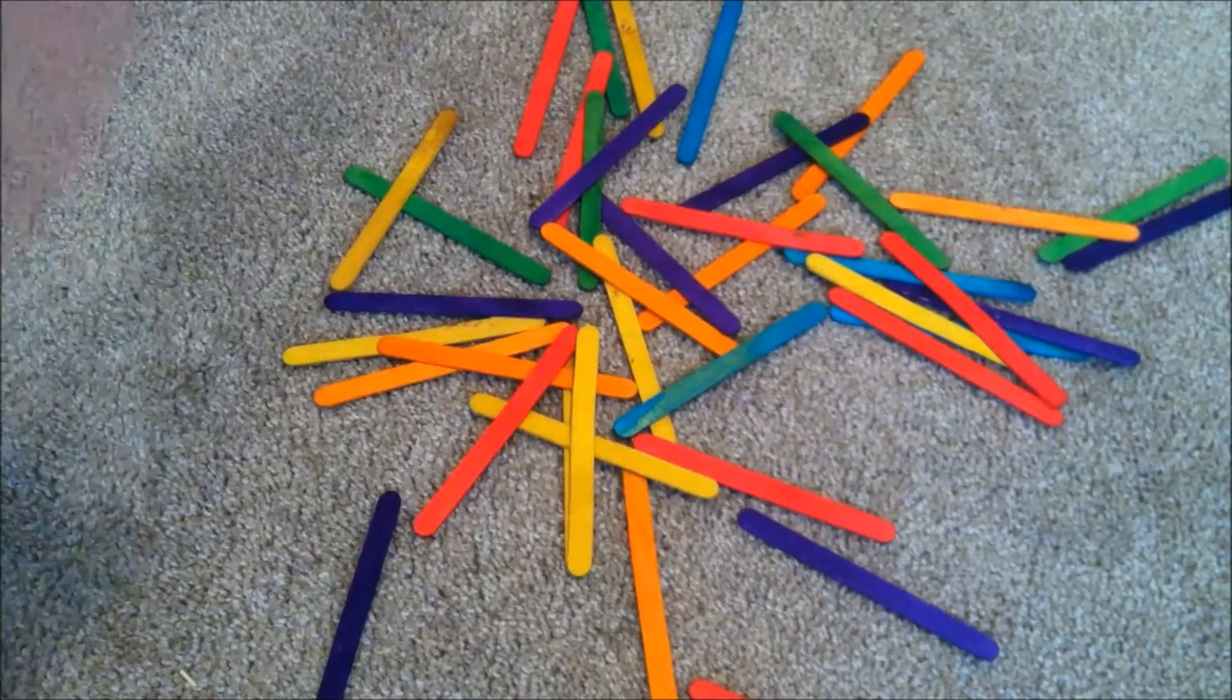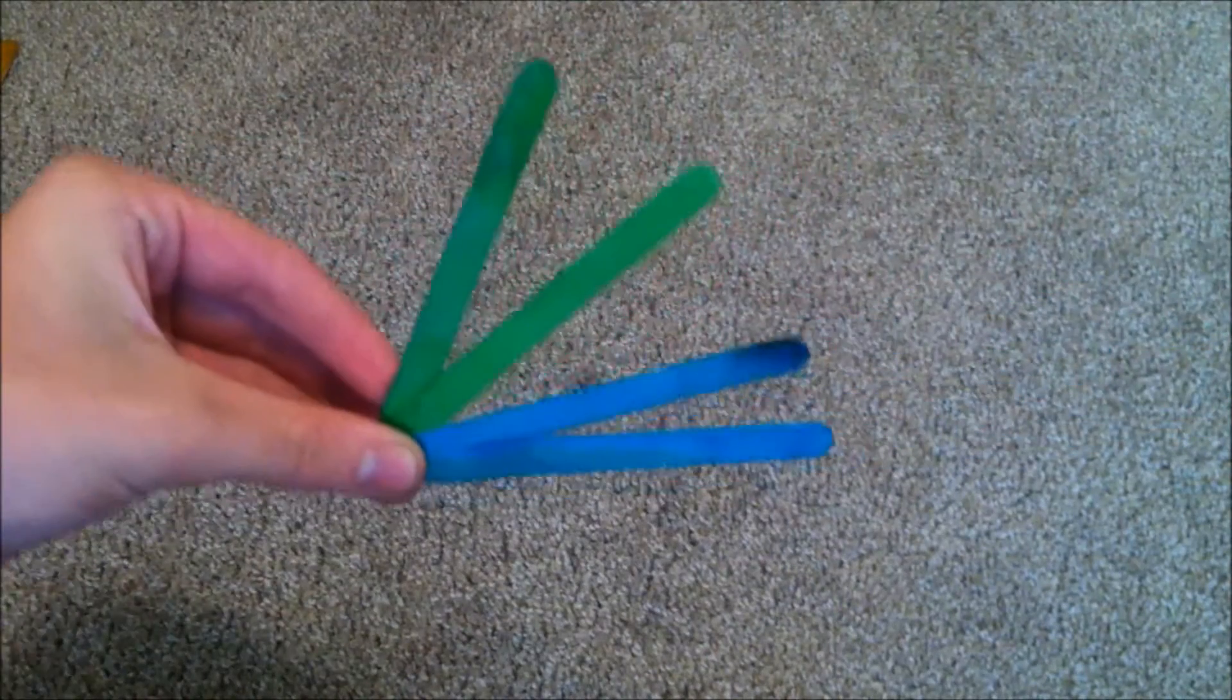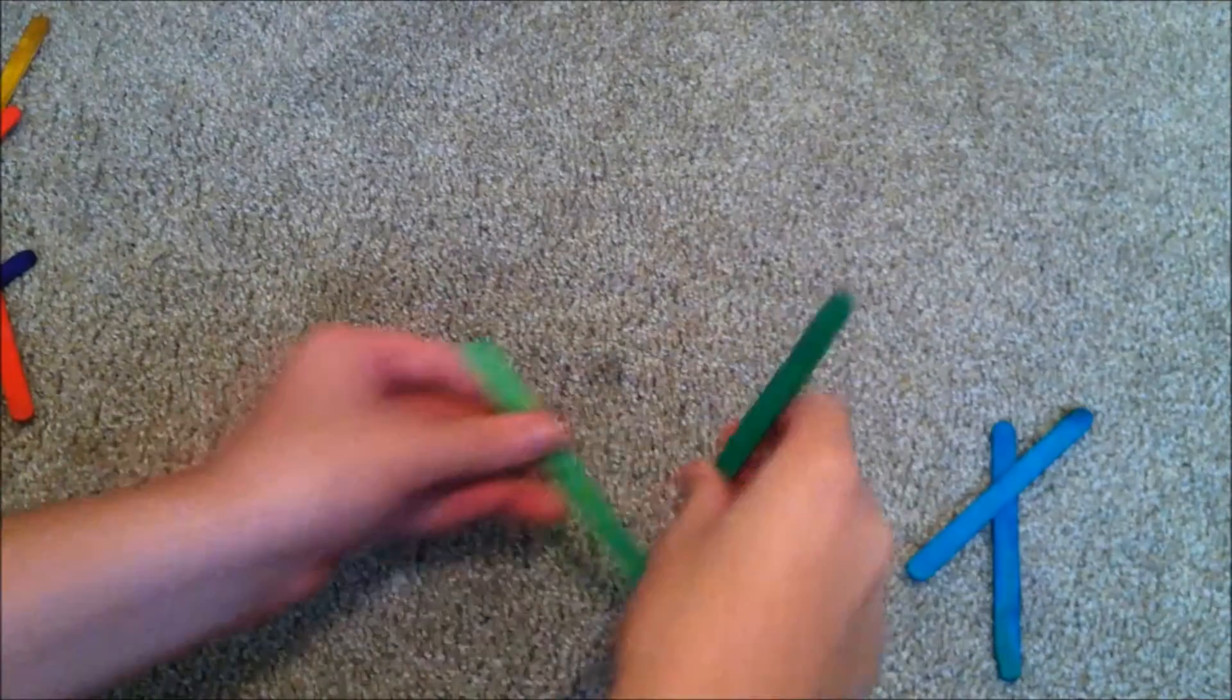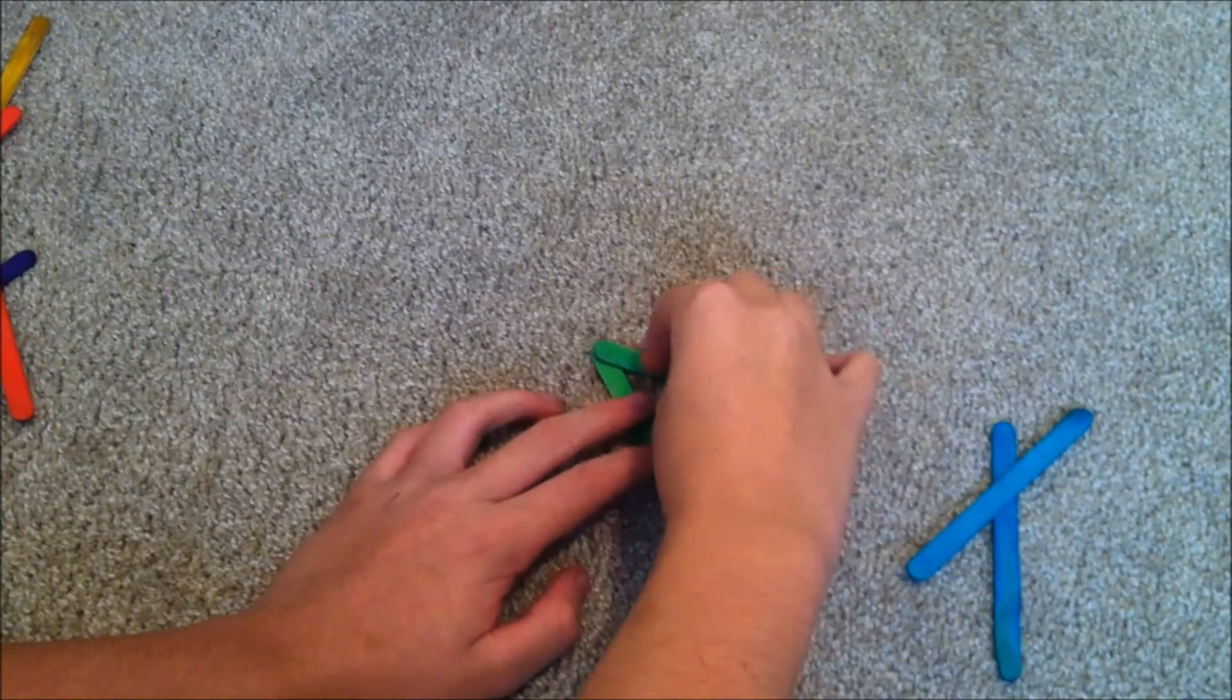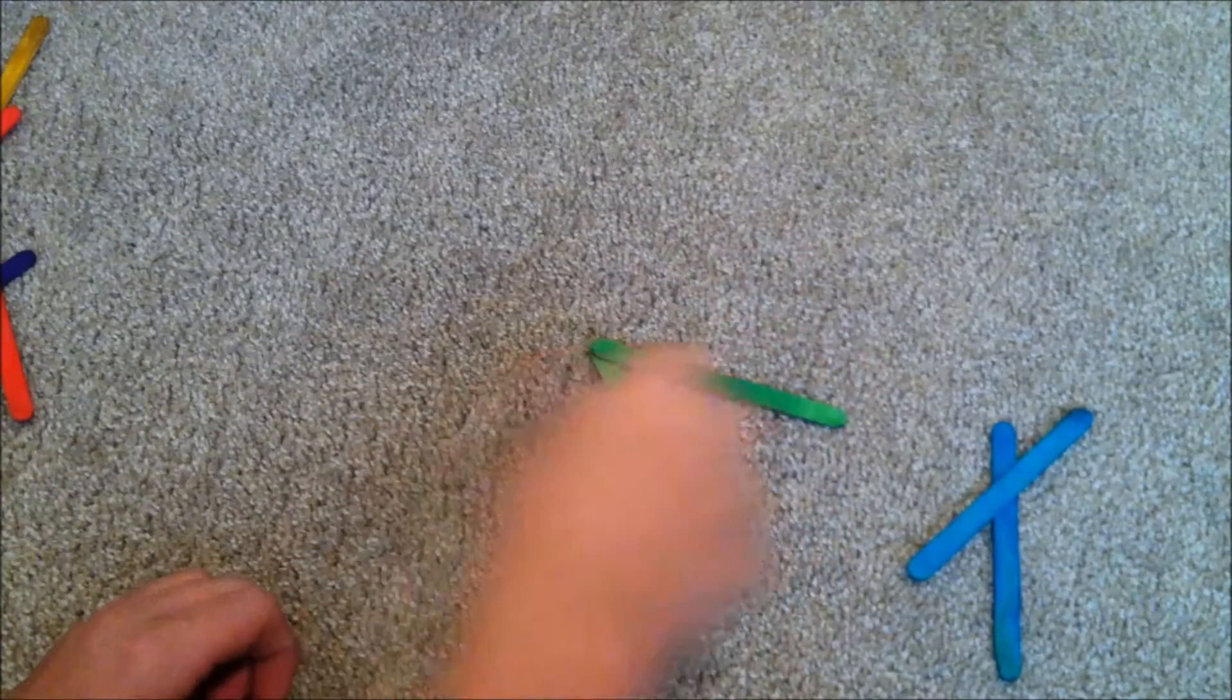For this project, all you'll need is some popsicle sticks. For this first one, you need four popsicle sticks. Align them in a V-shape with the top one overlapping the other, then put this next one on overlapping both. Hold those firmly together.